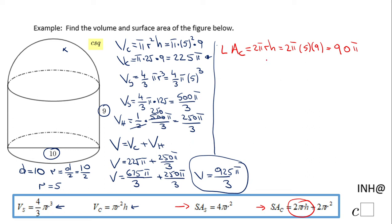The surface area of this composite shape also includes the base of the cylinder. The area of that circular base is pi r squared. With a radius of 5, that gives us pi times 25, so the base area is 25 pi.